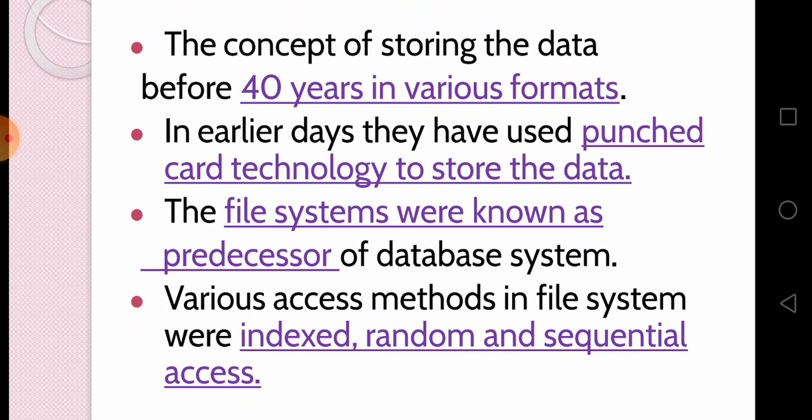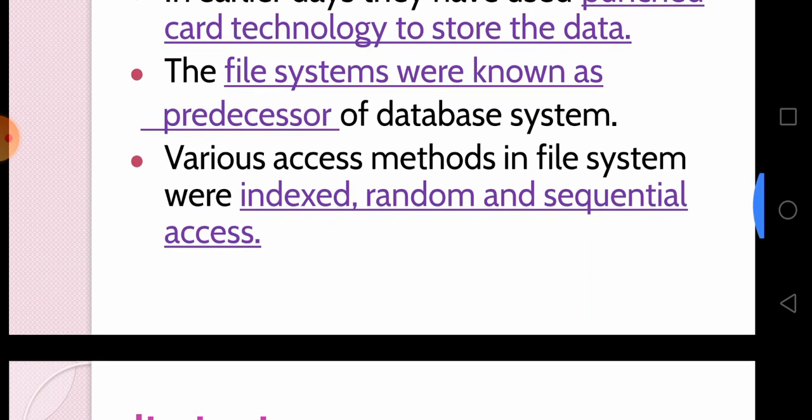What is meant by index? In the front page of a textbook, topics are indexed with page numbers. Random means accessing data in no particular order — for example, if a teacher conducts an oral test, they ask roll number 1, then roll number 7, then roll number 18 — that is random. Sequential means it comes in order, one by one. These are the various access methods used in database and file management systems.